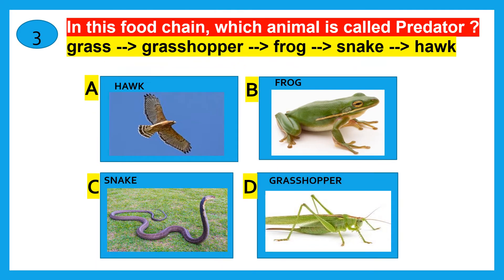In this food chain, which animal is called predator? Hawk, frog, snake, grasshopper? The correct answer is hawk.